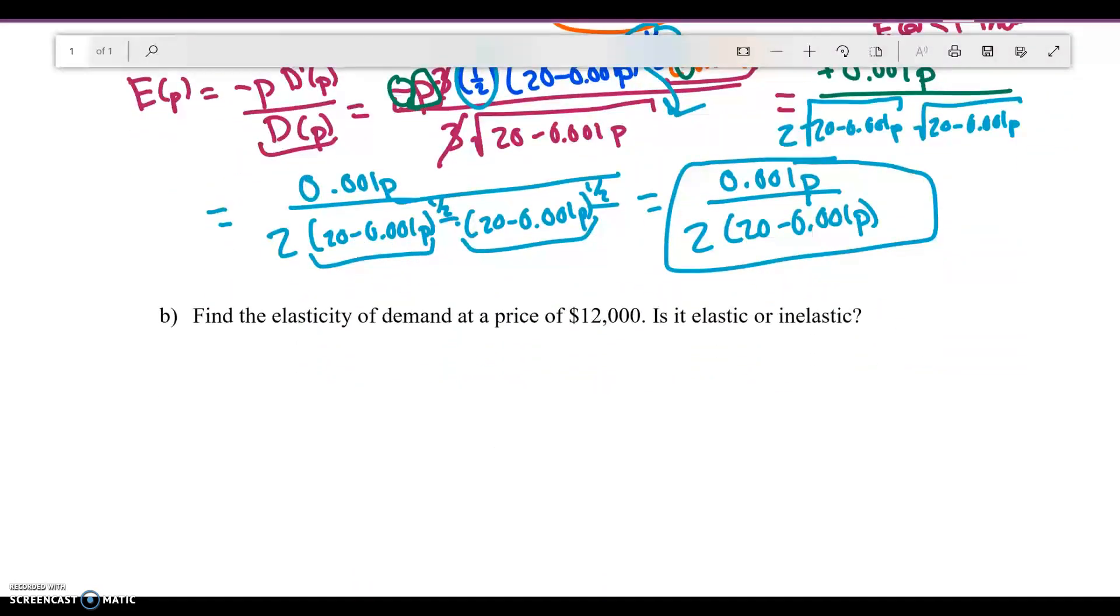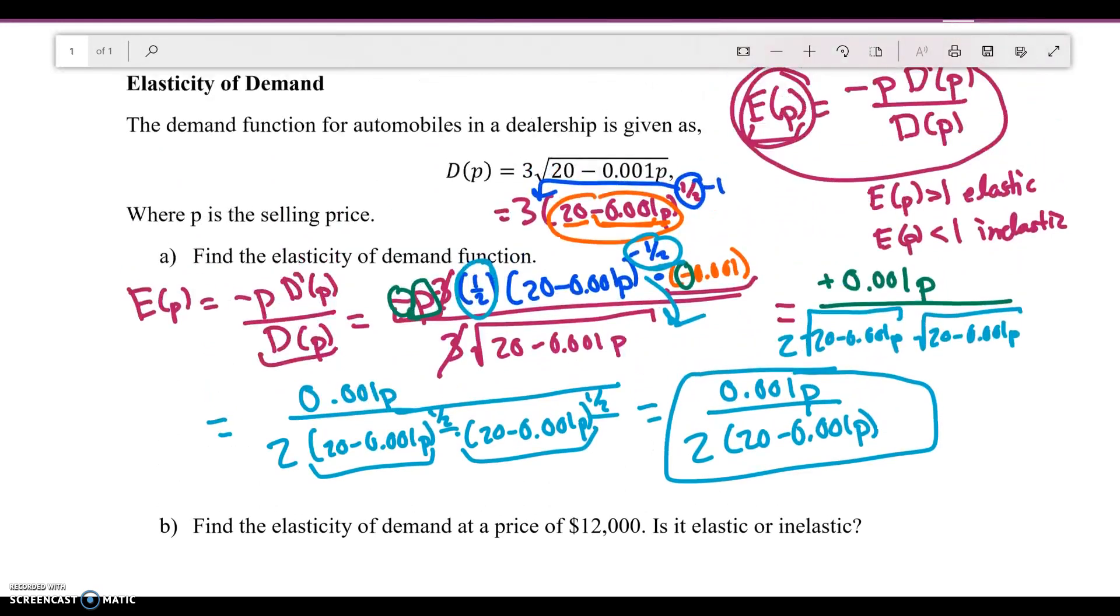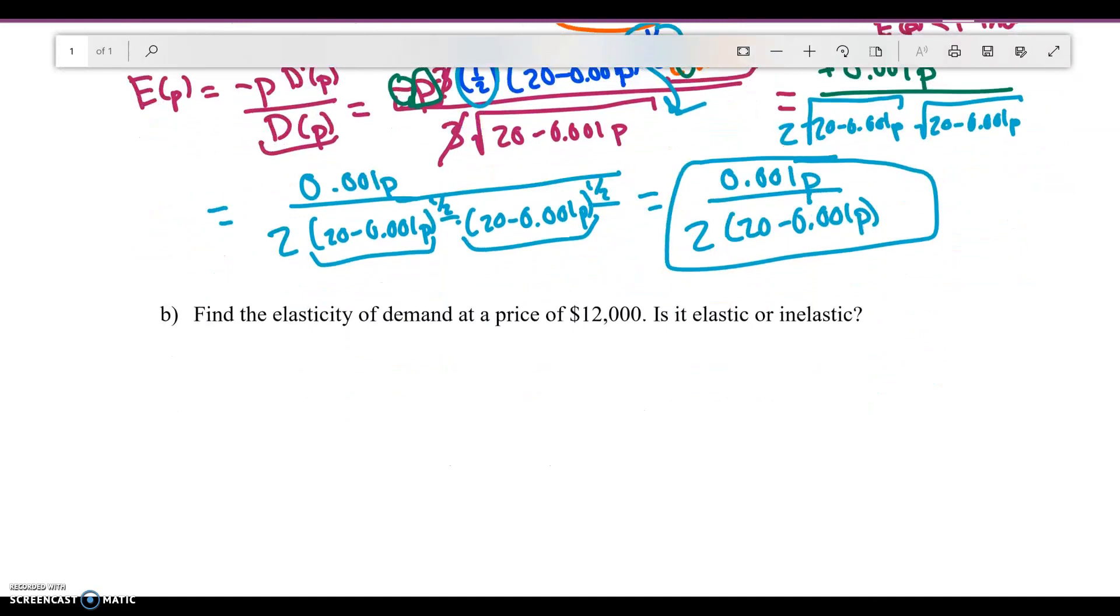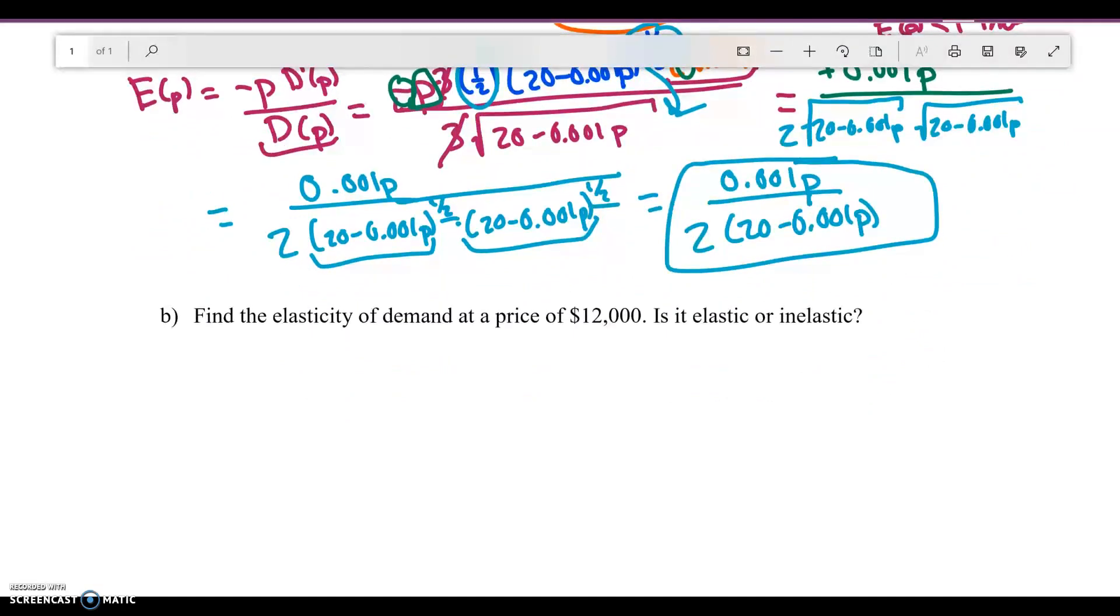So now what we want to figure out is find the elasticity of demand at a price of $12,000. So if I charge an automobile or the selling price, the price of an automobile is just $12,000, would that make the automobile an elastic good or an inelastic good? So I'm going to plug in my 12,000 into my P. So this is going to be 0.001 times 12,000 divided by 2 times 20 minus 0.001 times 12,000.